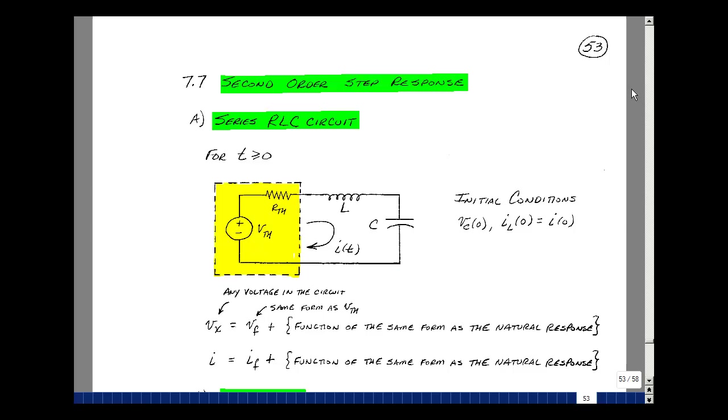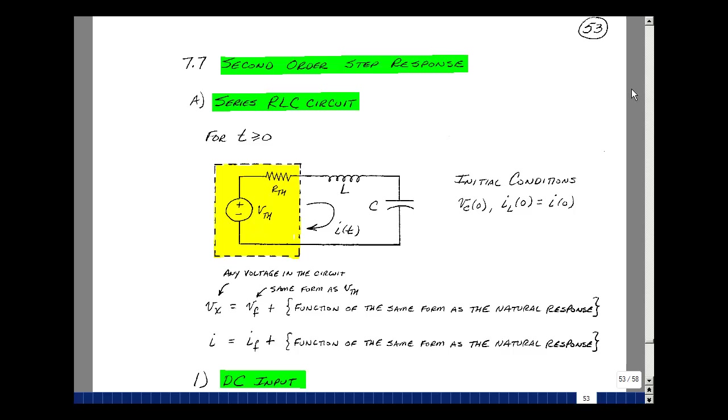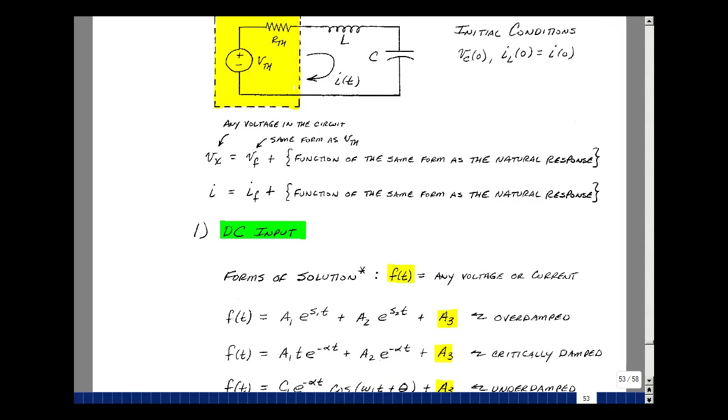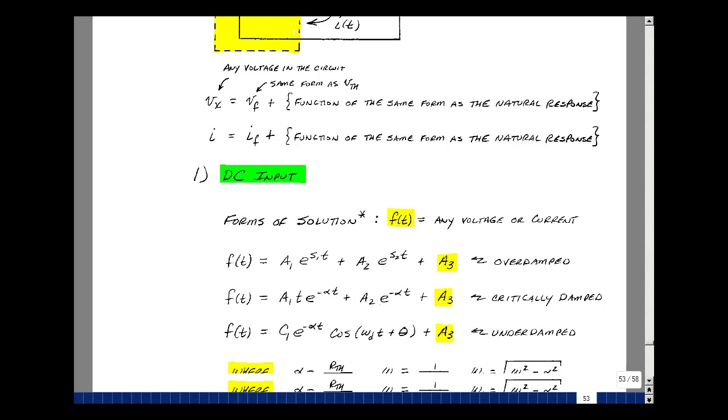As we'd seen with the first-order differential equation, any voltage or any current was the sum of a natural response and the forced response. This is true for any voltage or any current in this circuit, too. So the form of our solution for any voltage or any current is going to be what we had for our natural response, and then we're going to add a forced response in, in this case a DC result.